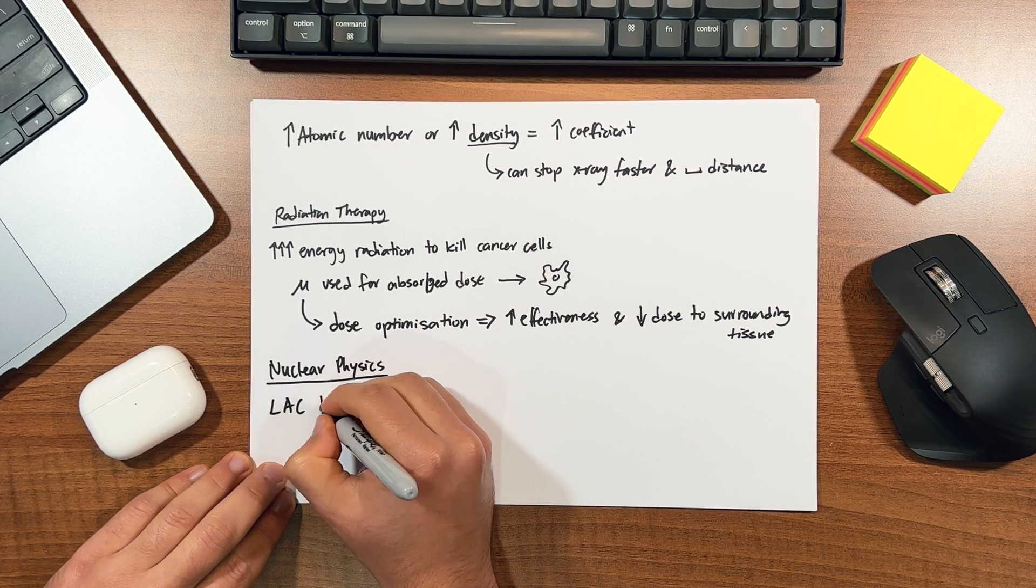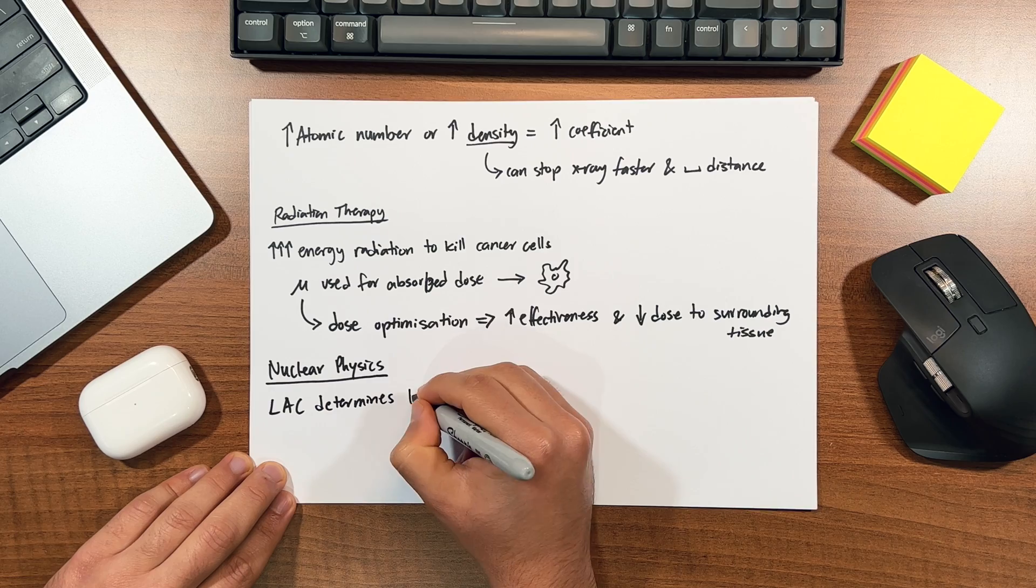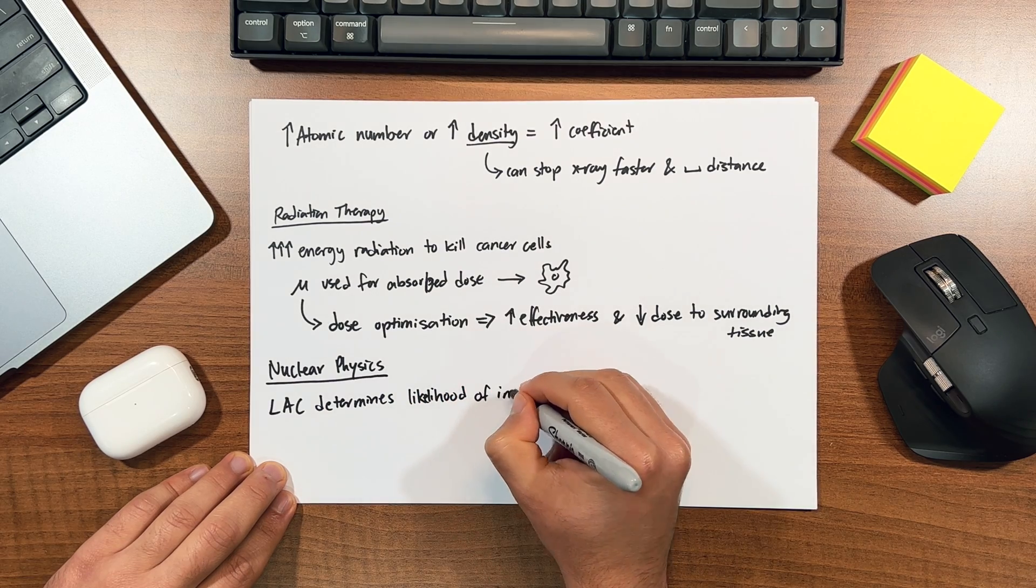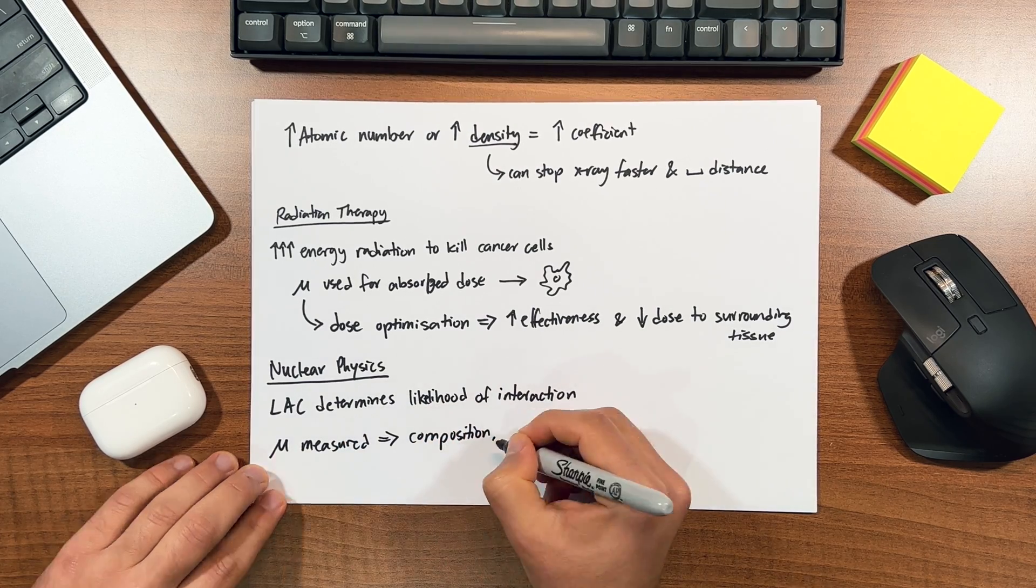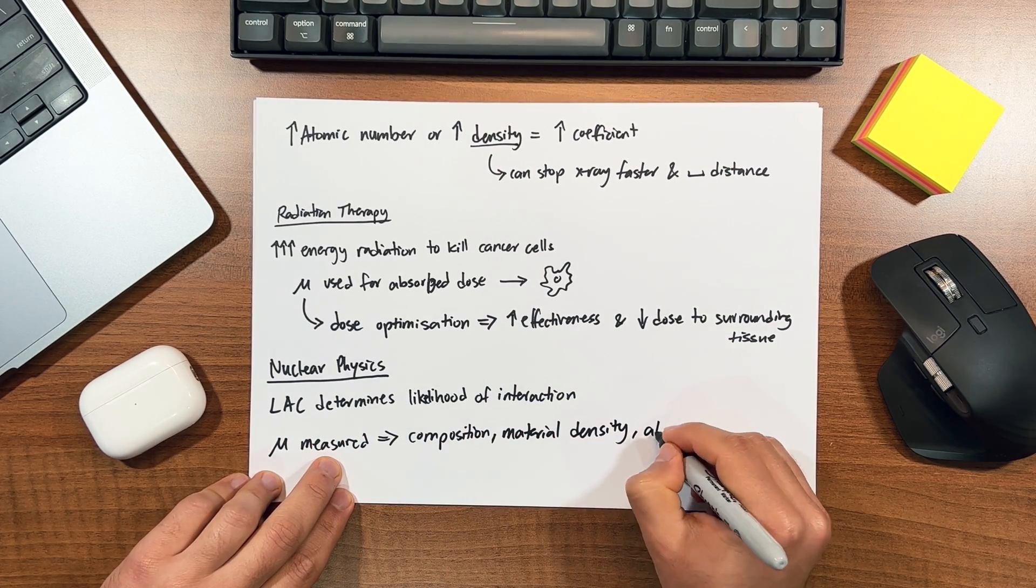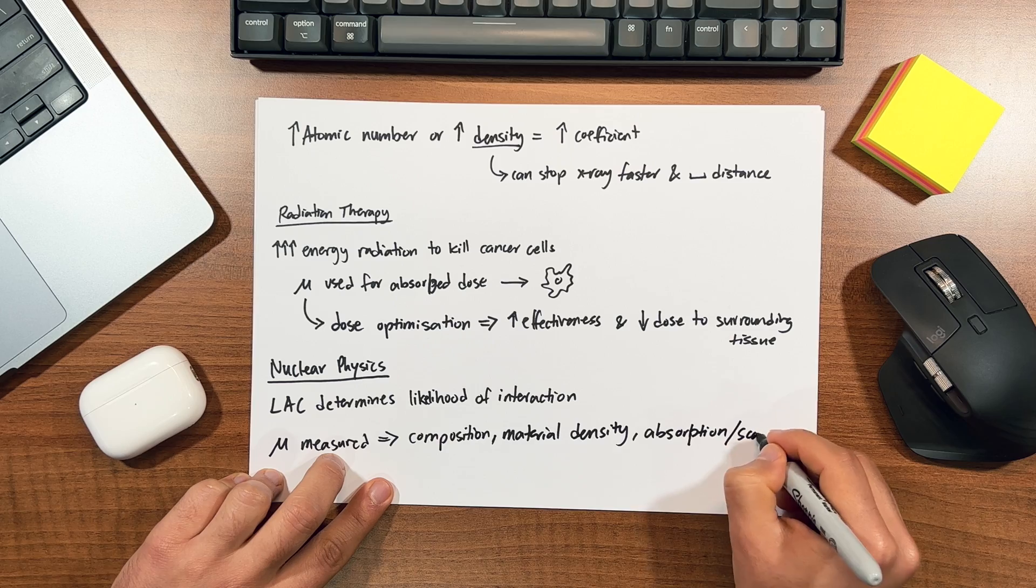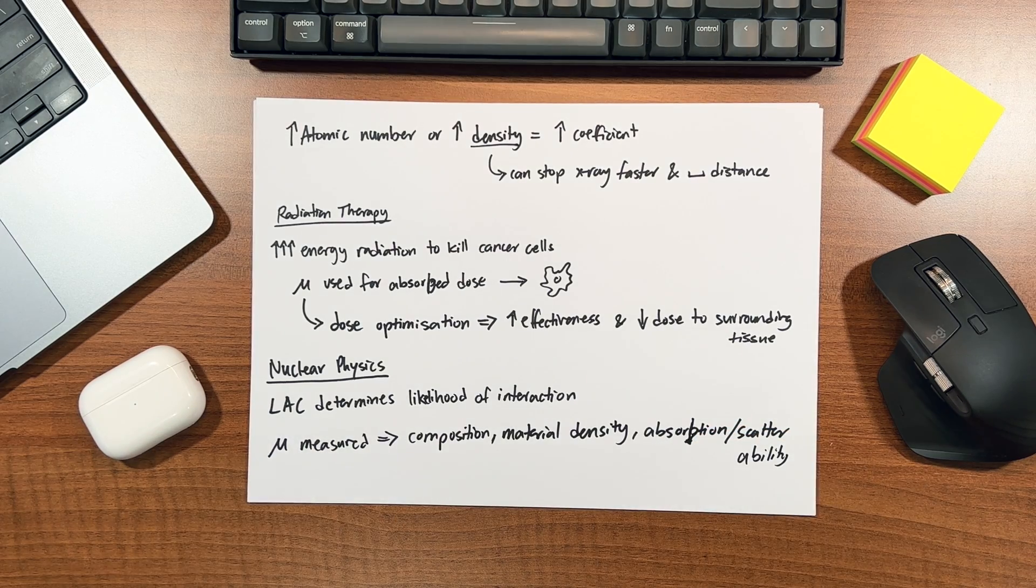In nuclear physics, the attenuation coefficient is an important property of materials that determines the likelihood of radiation interacting within the material. By measuring the attenuation of radiation as it passes through different materials, we can determine the composition and density of the materials as well as their ability to absorb or scatter radiation.